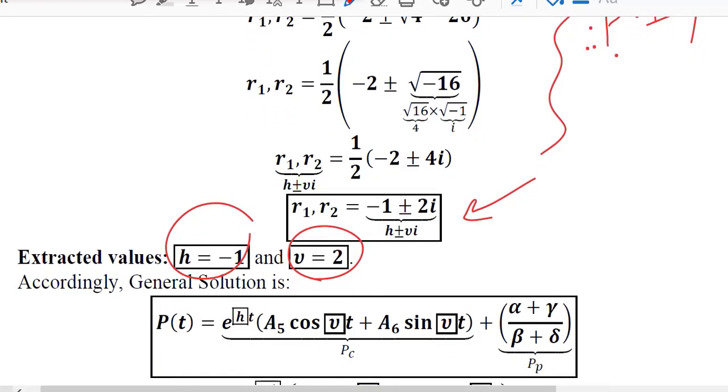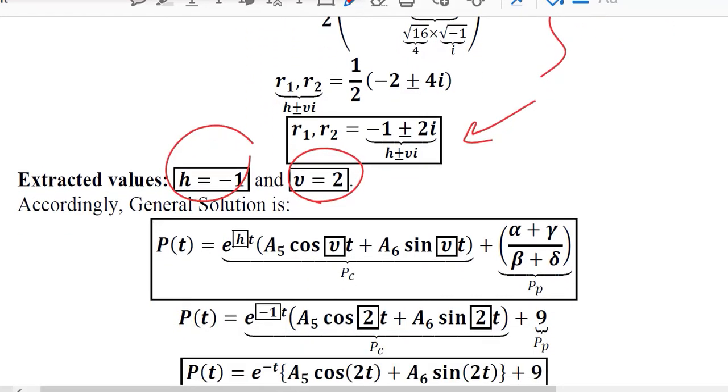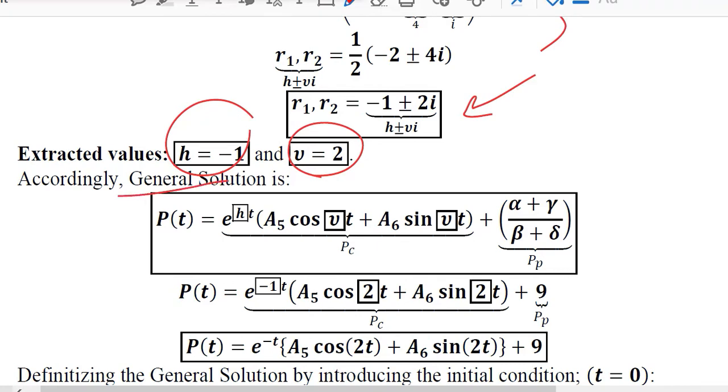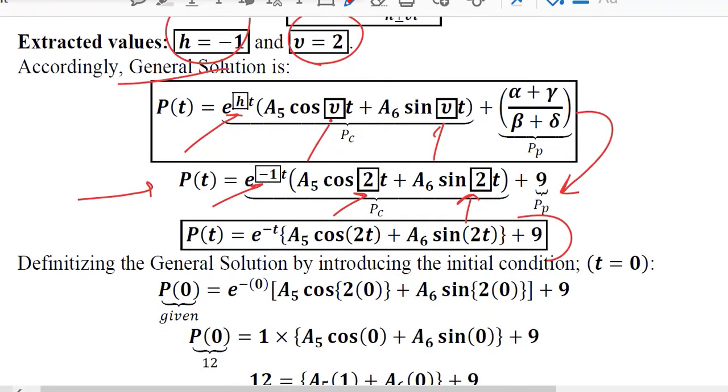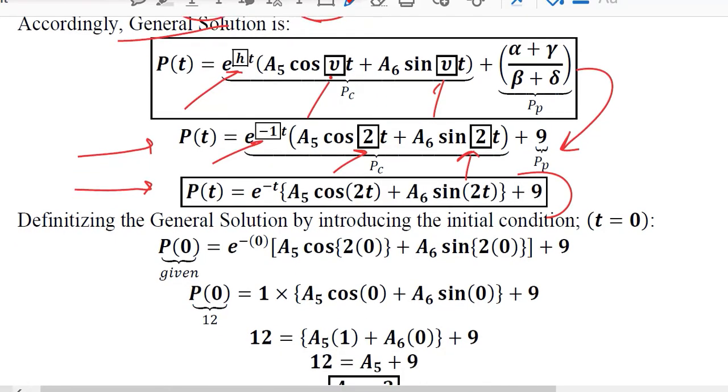So we have these two crucial values that we can use to put in the general solution which will allow us to have the answers of the time path. In this case this certain answer, and this is the particular integral which is 9 which shows a static equilibrium. And finally we have this time path which is general in nature. So we definitely want to definitize it. And for that what we can do is we can put t is equal to 0.